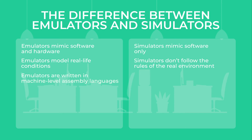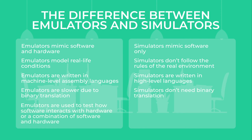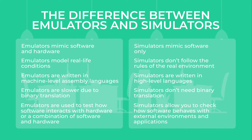Emulators are written in machine-level assembly languages; simulators are written in high-level languages. Emulators are slower due to binary translation; simulators don't need binary translation. Emulators are used to test how software interacts with hardware or a combination of software and hardware. Simulators allow you to check how software behaves with external environments and applications.